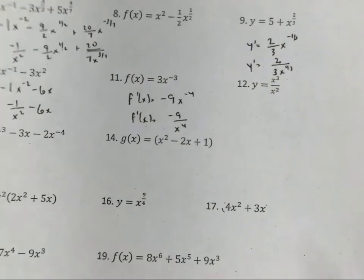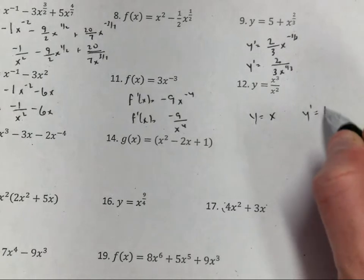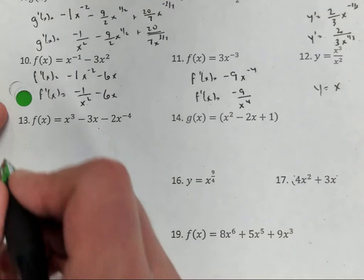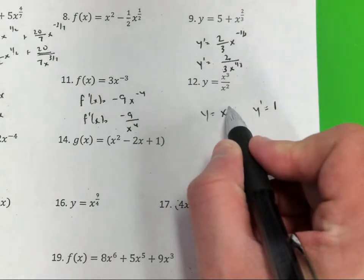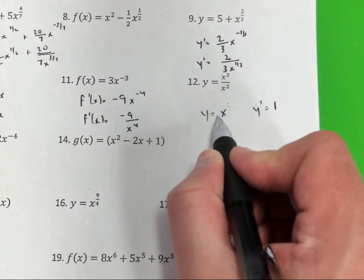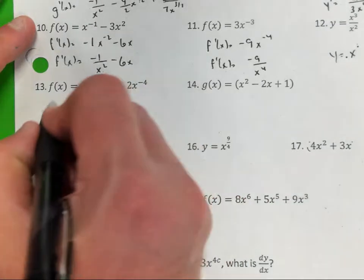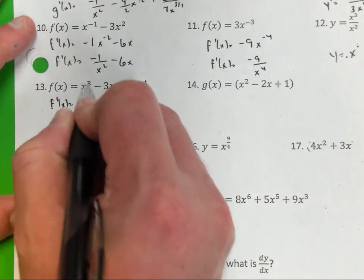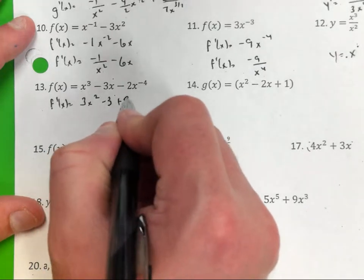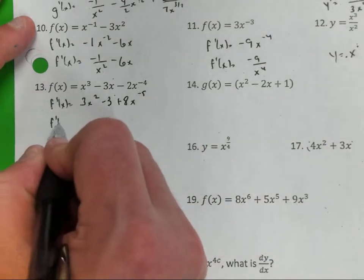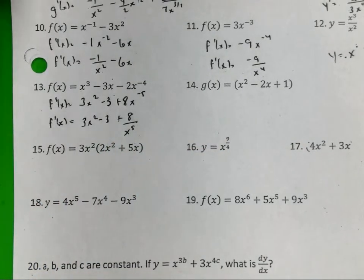On number 12, what do you think we need to do before we take the derivative? Simplify. When you're dividing like bases, you subtract the exponents — 3 minus 2 is 1 — so it's just x, and y prime equals 1. Number 13, l prime of x: bring the exponent down — 3x squared. 1 times negative 3 is negative 3. Negative 4 times negative 2 is positive 8, x to the negative 5th. So f prime of x equals 3x squared minus 3 plus 8 over x to the 5th.